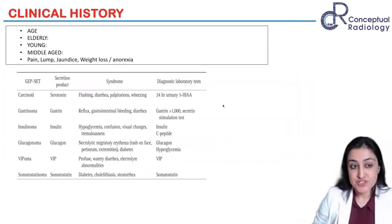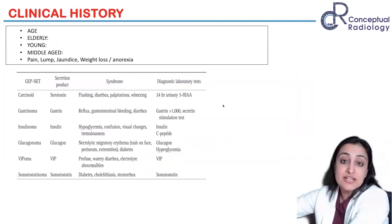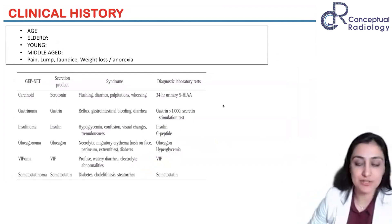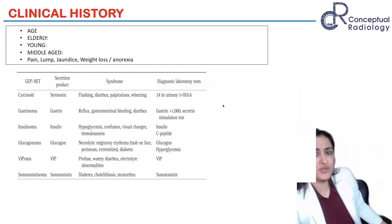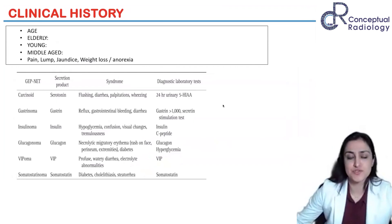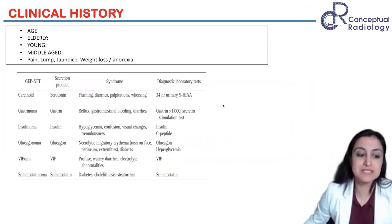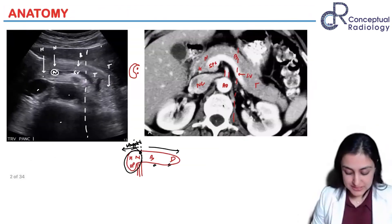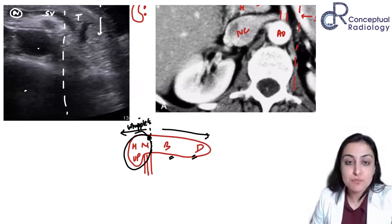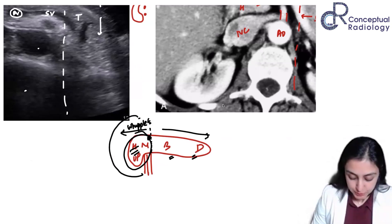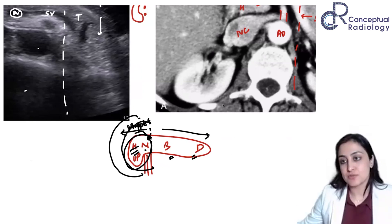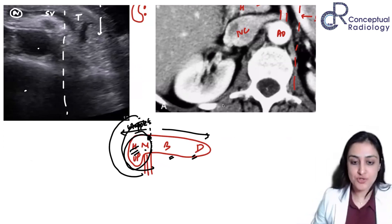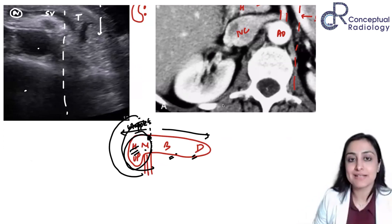How will the patient present? In the pancreas, the age is so distinctive that when you see the age, you kind of make a diagnosis in your mind. The Longmire procedure is for chronic pancreatitis — it's a duct anastomosis. Whipple's is where you remove the duodenum and pancreas, sparing the pylorus — called pylorus-preserving pancreaticoduodenectomy. They perform hepaticojejunostomy, duodenojejunostomy, and a pancreaticojejunostomy for the remaining tail.